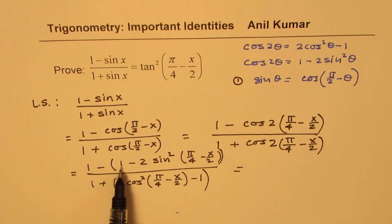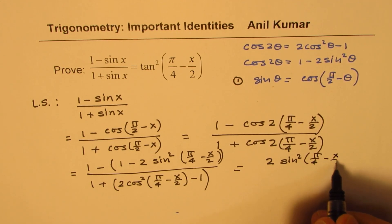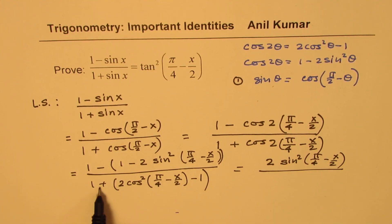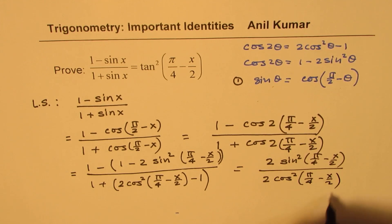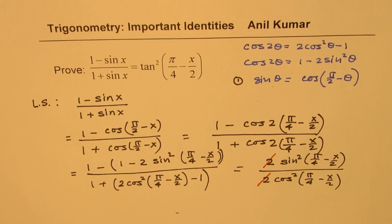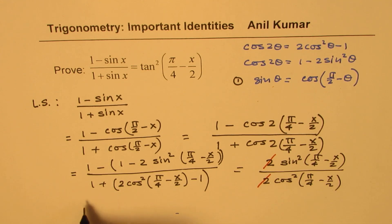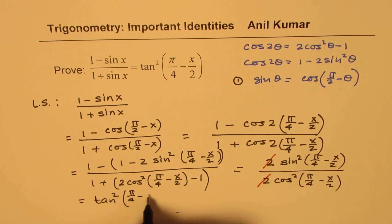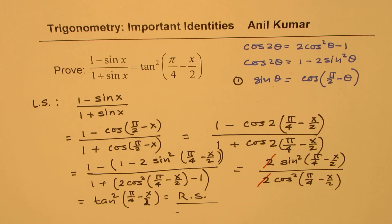When you open the bracket, 1 minus 1 is 0, and the negative makes the sine term positive. So we get 2 sine squared of pi by 4 minus x by 2 in the numerator. In the denominator, 1 and minus 1 also cancel, giving 2 cos squared of pi by 4 minus x by 2. Canceling the 2's, we are left with sine squared over cosine squared of pi by 4 minus x by 2, which is indeed tan squared of pi by 4 minus x by 2 — equal to the right-hand side.